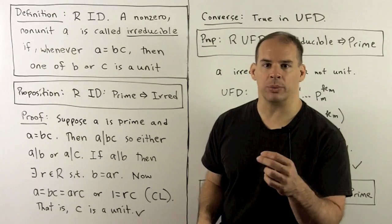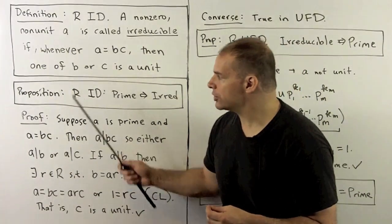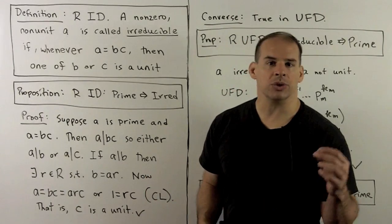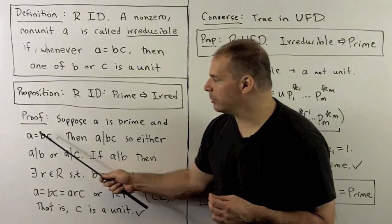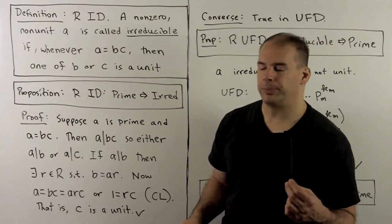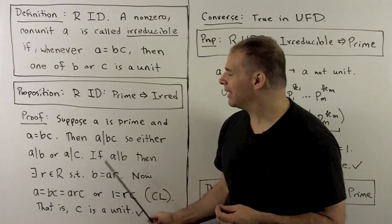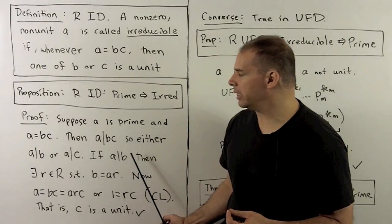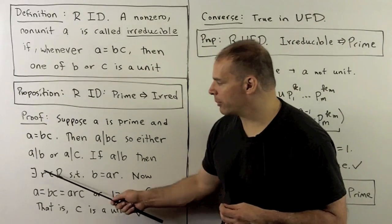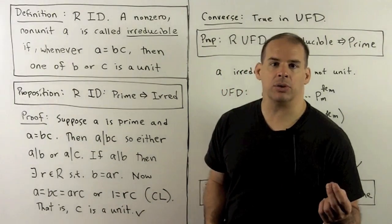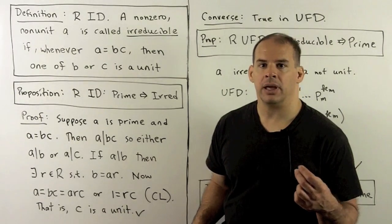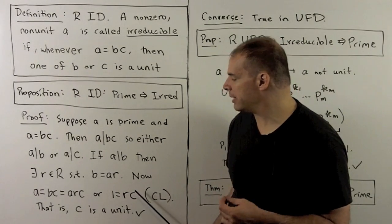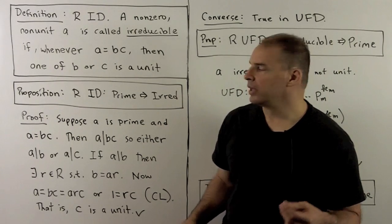Proposition: if R is an integral domain, then prime implies irreducible. Suppose a is prime and a = bc; we want to show one of b or c is a unit. Because a = bc, a divides bc, and by the prime property, a divides b or a divides c. Assuming a divides b, there is some r in the ring such that b = ar. Substituting: a = arc. By the cancellation law in an integral domain, 1 = rc, which means c is a unit. So we have one direction.